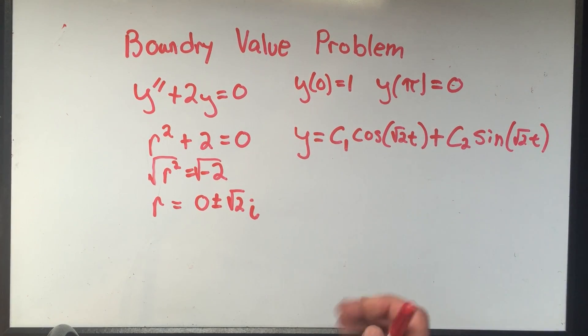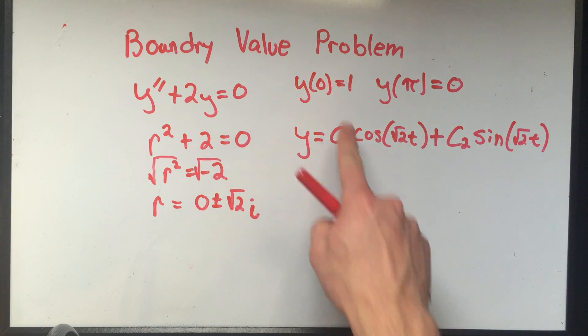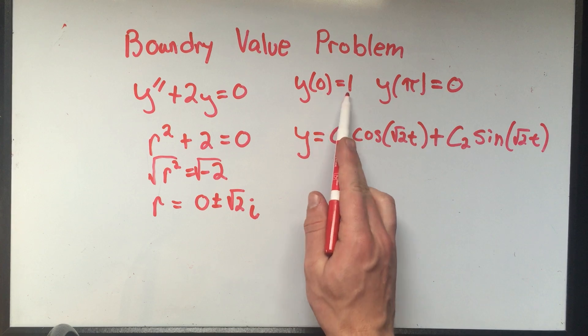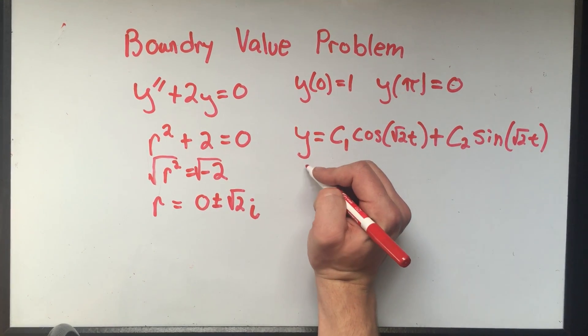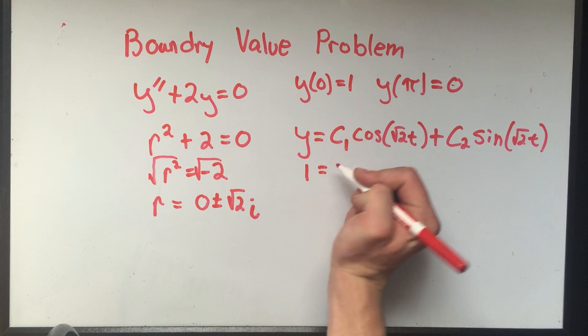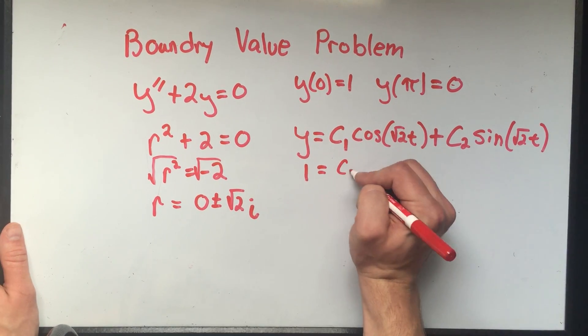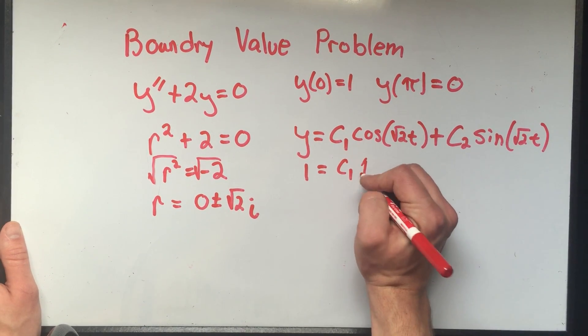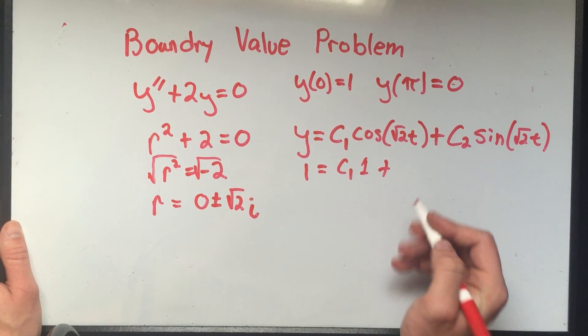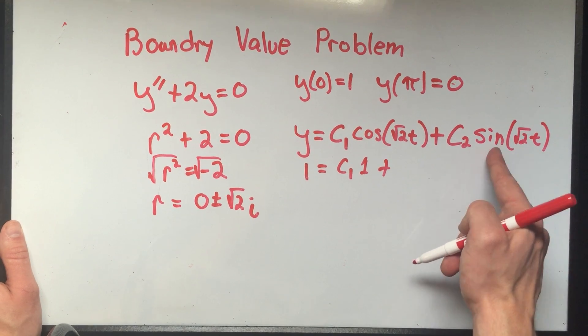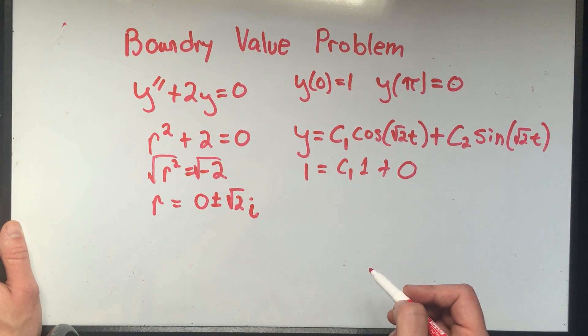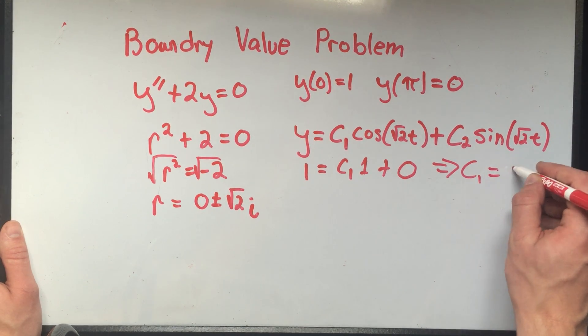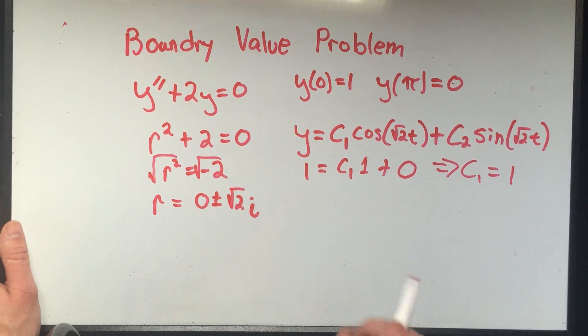So now I'm just going to solve for my c1 and c2. This is my general solution. I want my specific solution. So if I plug in zero for t, I better get one. So this says that one has to equal c1 cosine of zero is one plus, well, sine of zero is zero, so this would be plus zero. So it looks like c1 is one.